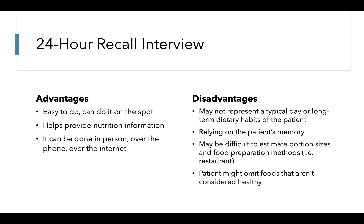Advantages of the 24-hour recall are that it can be easy to do and can be done on the spot if you have someone trained in the method. It provides detailed nutrition information about a typical day of eating, including nutrient deficiencies, calorie intakes, and levels of macro versus micronutrients. It can be done in person, over the phone, or over the internet. However, findings may not be representative of a typical day or long-term dietary habits, so it may be helpful to ask additional questions about how representative that day was. Recall findings may also be biased due to reliance on the patient's memory, and patients may have difficulty estimating portion sizes and food preparation methods, especially if eating outside the home.